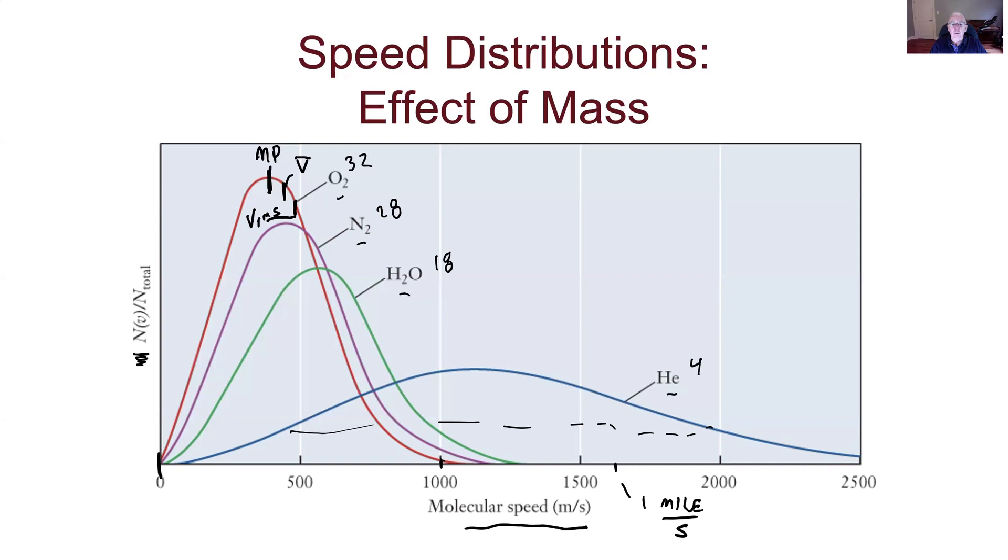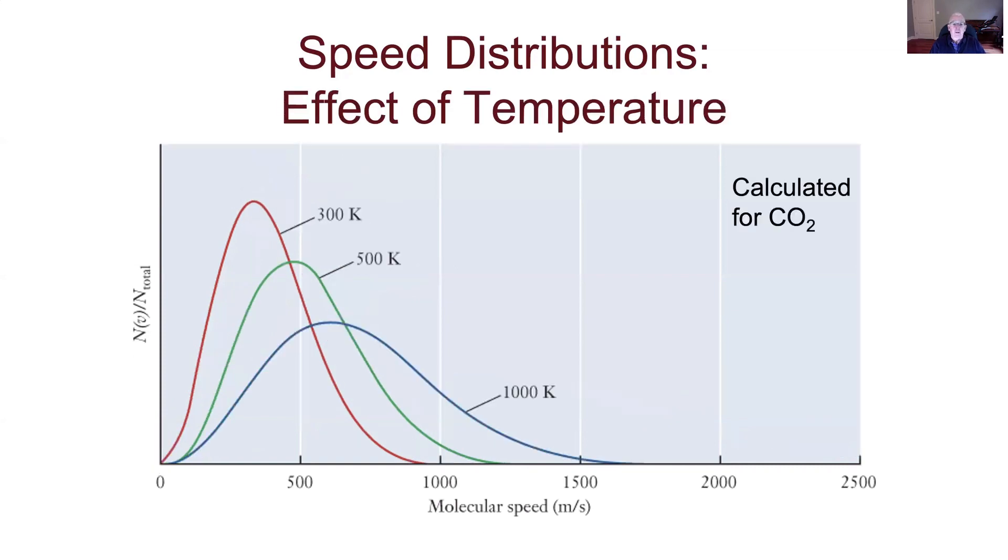We can also look at a similar set of graphs for different temperatures. This one, all the calculation is for CO2. In this case, mass 44 grams per mole. And you can see there's 300 Kelvin, 500 Kelvin, 1000 Kelvin. And you can see a similar thing happens. The appearance of these is similar. As the gas gets hotter, the peak gets broader and the maximum moves out to faster and faster speeds. So that's just a look at how the speeds of gases vary.